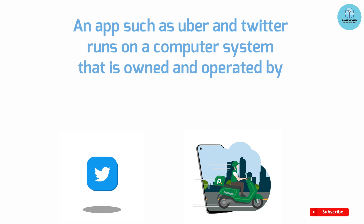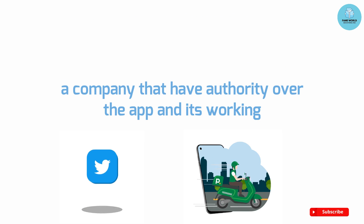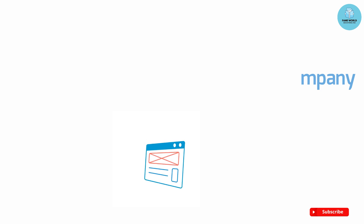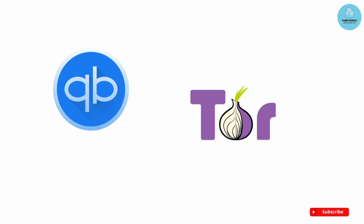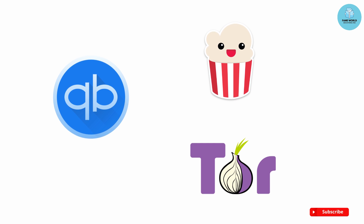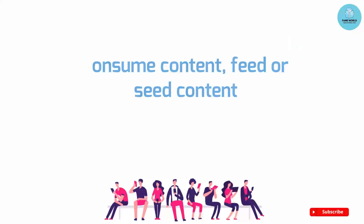An app such as Uber or Twitter runs on a computer system that is owned and operated by a company that has authority over the app and its working. No matter how many users there are, the backend is controlled by the company. dApps can run on a P2P network or a blockchain network. For example, BitTorrent, Tor, and Popcorn Time are applications that run on computers that are part of a P2P network, which allows multiple participants to consume, feed, or seed content.